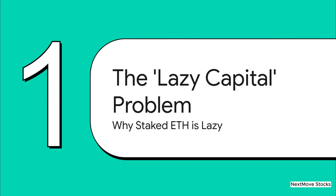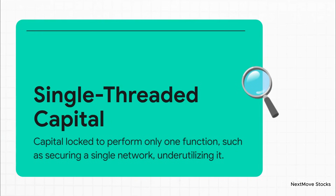To really get why restaking is such a big deal, we first have to understand the problem it was designed to fix, and it really all comes down to a simple idea. Right now, billions and billions of dollars in capital are just being kind of lazy. When you stake Ethereum today, your money gets locked up to do one job and only one job — secure the main Ethereum network. It helps validate transactions, it proposes blocks, and for that service it earns a yield. But that's it. It's what we call single-threaded. Think of it like having a superstar employee who can only ever answer the phone, even though they've got a dozen other incredible skills. That capital is just not living up to its full potential.